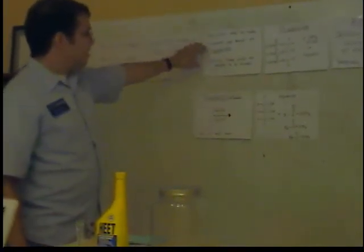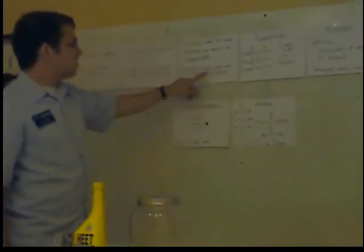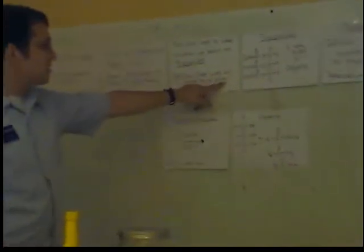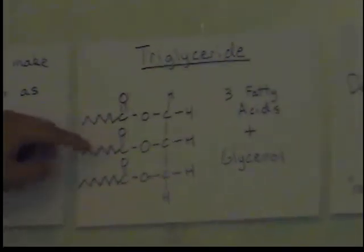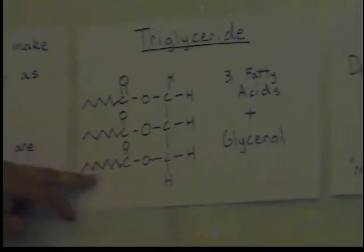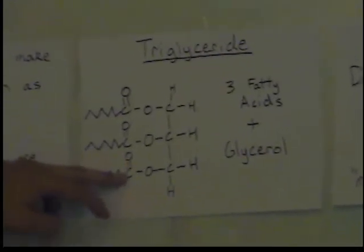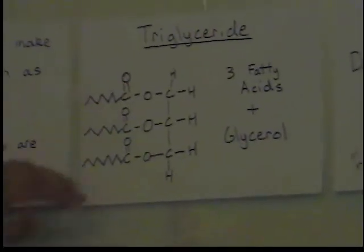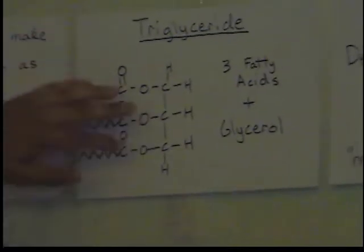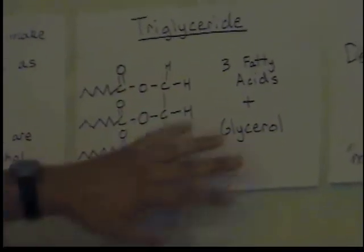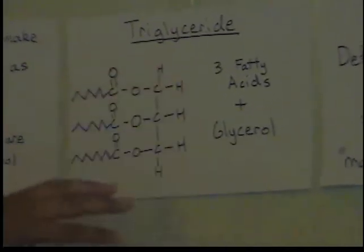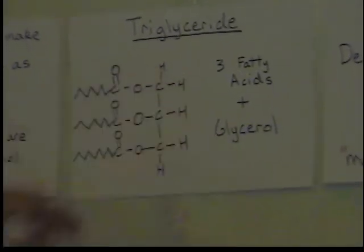A triglyceride is three acids that are bonded to an alcohol. In the next diagram right here, I actually drew that out for you. You can see these three fatty acid chains right here — it looks like the little squiggly lines when you're drawing in organic chemistry. They're connected to this glycerol structure right here, and this whole thing is called a triglyceride.